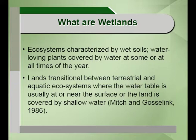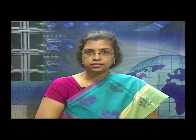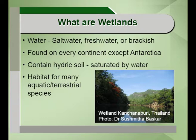They can also be defined by Mitch and Gooseling in 1986 as the lands that are transitional between terrestrial and aquatic ecosystems where the water table is at or nearly at the surface of the land covered by shallow water. That means they are lands sandwiched between two distinct ecosystems, the terrestrial and the aquatic ecosystems.